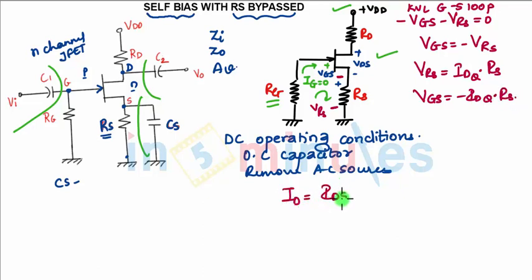Now in the problem they will specify the value of IDSS, specify the value of VP, and from this diagram we have got the relation between VGS and IDQ.